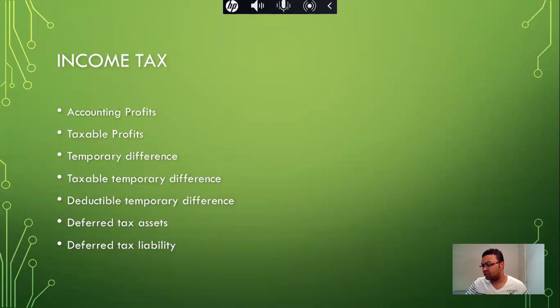Taxable temporary difference is described as a temporary difference that will yield tax amounts in the future when recognizing taxable profits or losses. Deductible temporary difference arises when a temporary difference will yield amounts that can be deductible in the future when determining taxable profits or losses.